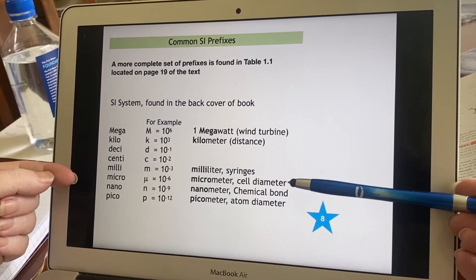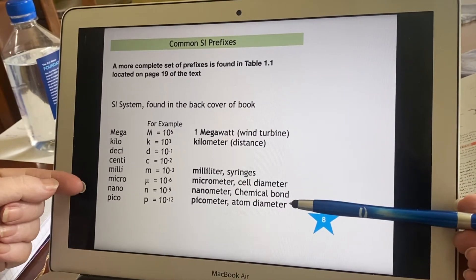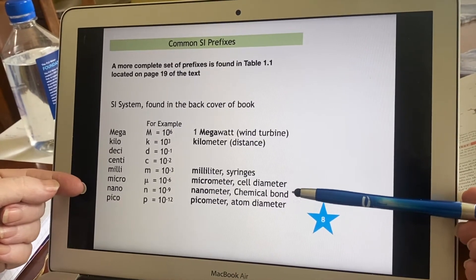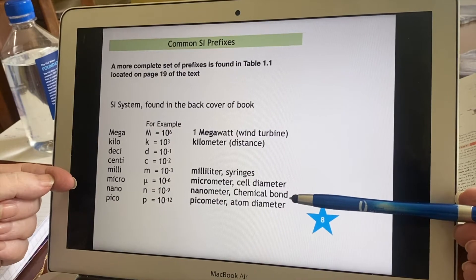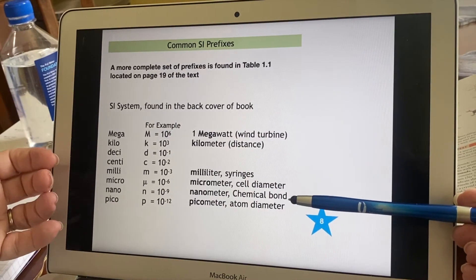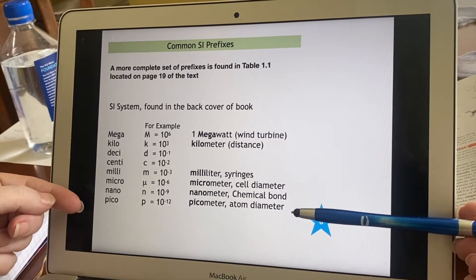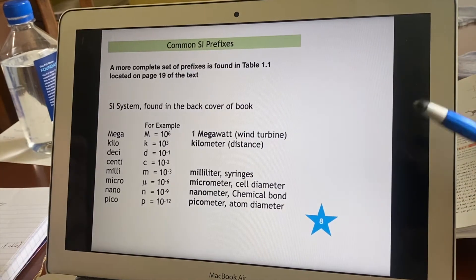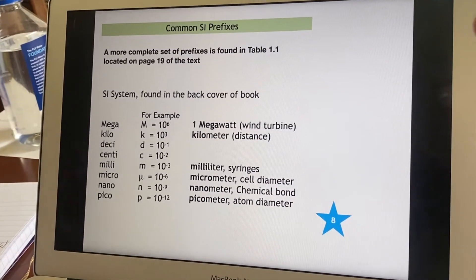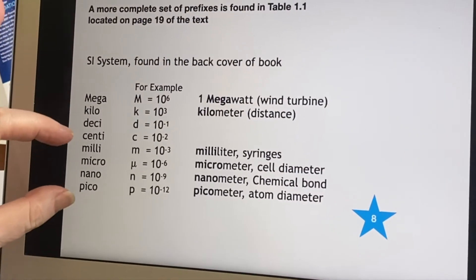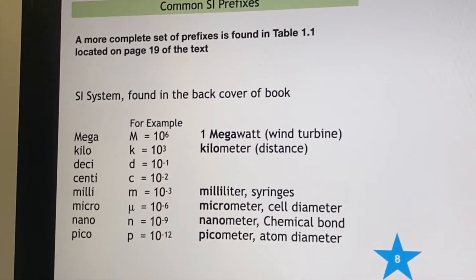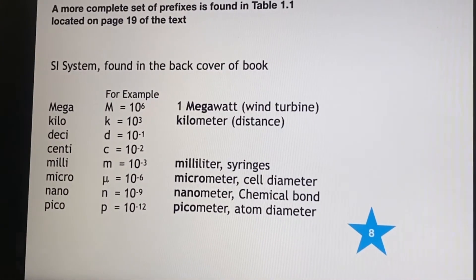Micrometers. That's about a cell diameter. Nanometers. That's the sort of unit you would use to start measuring the length of chemical bonds. And picometers would be talking about the diameter of an atom. So this is why this sort of range is what's important to us in chemistry, because those are the ones we'll be using most often.